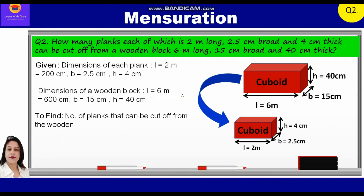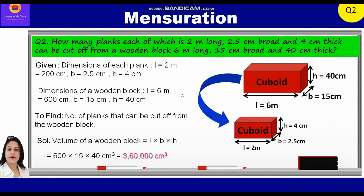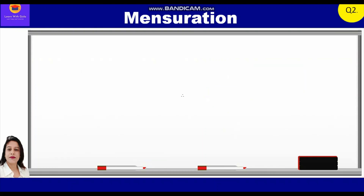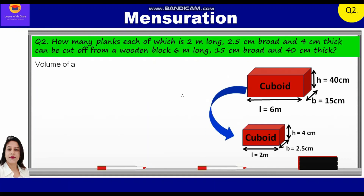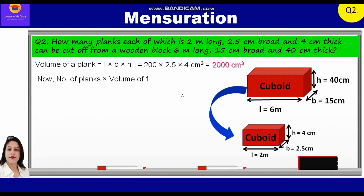Volume of the wooden block is equal to length into breadth into height. Substituting the values: 600 into 15 into 40, which is equal to 3,60,000 centimeter cube. Volume of a plank is equal to length into breadth into height, which is equal to 200 into 2.5 into 4, which is equal to 2,000 centimeter cube. Number of planks into volume of one plank is equal to volume of the wooden block.